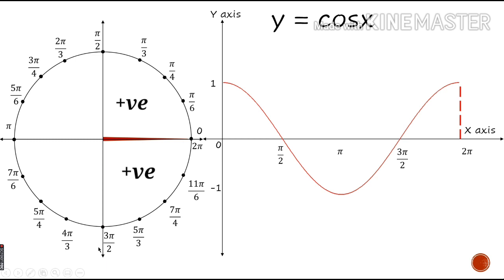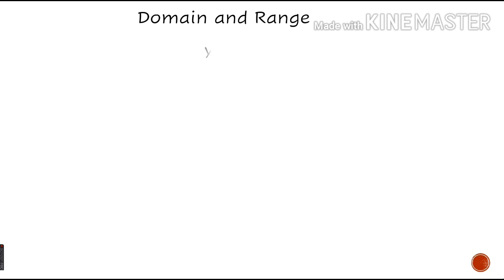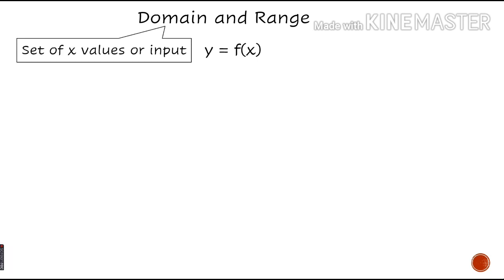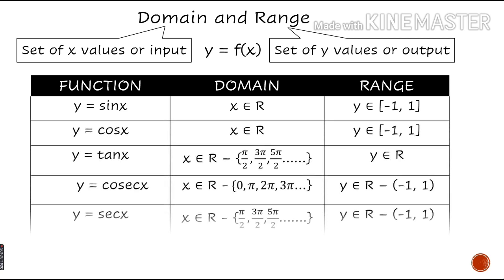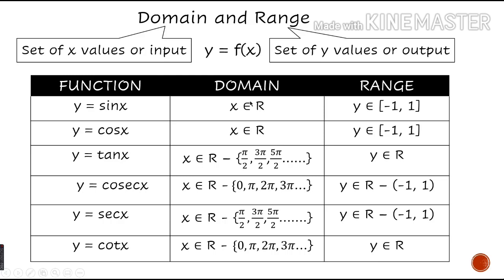Using these graphs, we can easily consider the domain and range for the trigonometric functions. When we write a function y equal to f(x), the set of x values or input is called the domain, and the set of y values or output is called the range. For y equal to sin x, the domain is the whole set of real numbers and the range is the closed interval minus 1 to 1. Similarly, for y equal to cos x, the domain is the set of real numbers and the range is the closed interval minus 1 to 1.